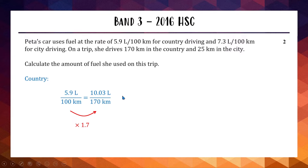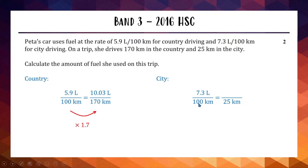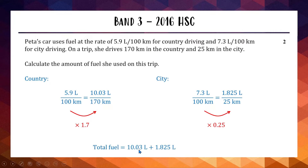For the city, our fuel rate is higher because we're stopping, starting, and accelerating more — 7.3 liters per 100 km. We're driving 25 km in the city, and 25 is a quarter of 100, so we multiply by 0.25. So 7.3 times 0.25 equals 1.825 liters. Adding country and city together: 10.03 plus 1.825 gives us a total of 11.855 liters for two marks.